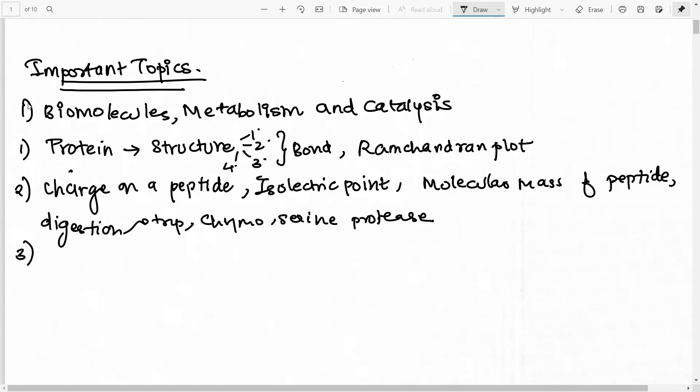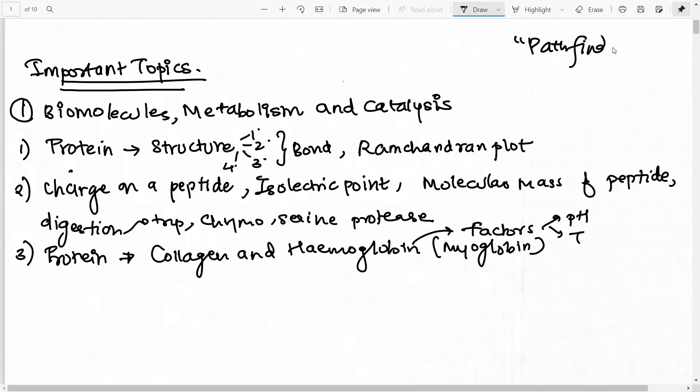Then, if I have to majorly tell you about certain proteins that they focus on, I can tell you two that you should very importantly do. One is collagen and second one that you must do is hemoglobin. And it will be great if you do the differences between hemoglobin and myoglobin, and also for hemoglobin you have to particularly see the factors that affect it - like there are factors like the pH effects, then the temperature effect. So whatever that means it should be very clear. What reference would I suggest? So I would suggest you to look for Pathfinder books. They are very comprehensive and very good to understand these topics.